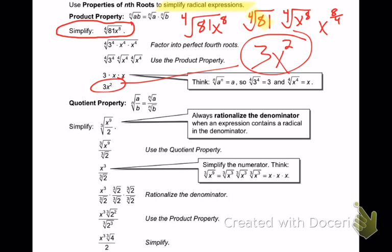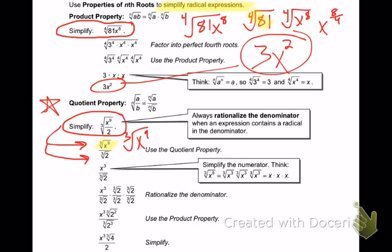Quotient property — this one gets a little bit tougher. I have a problem like this: it's the cube root of x to the ninth over 2, which is really like the cube root of x to the ninth over the cube root of 2. Let's look at the variable here first. I have the cube root of x to the ninth. What's 9 divided by 3? 3. So that gets me x to the third over the cube root of 2.